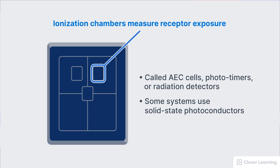The ionization chamber is a very important part of the AEC system. Most systems have three small chambers rather than one large chamber. Sometimes these chambers are called AEC cells, and depending on the part being imaged, you can choose to activate one, two, or all three of the chambers. Some systems have more than three, but they work in exactly the same way. AEC cells are also sometimes called phototimers or simply radiation detectors. Some AEC systems use solid-state photoconductors rather than ionization chambers, but they accomplish the same thing.